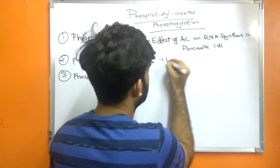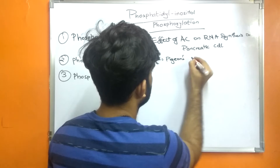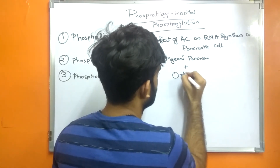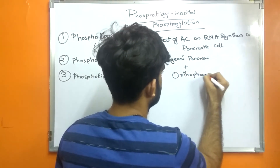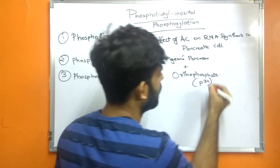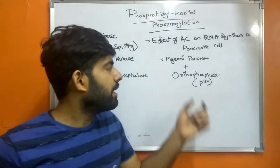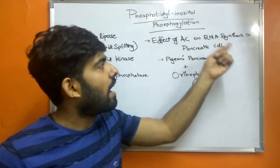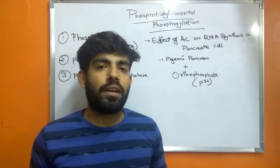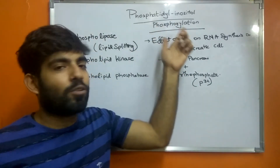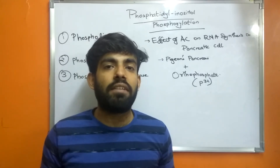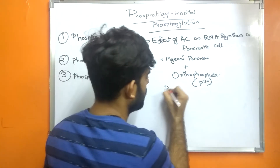What they did was incubate slices of a pigeon's pancreas with orthophosphate. This orthophosphate included the P32 radioisotope. They thought that the P32 radioisotope would be utilized in RNA synthesis, but later studies revealed that this P32 was incorporated into the plasma membrane for the formation of phosphatidyl inositol, which was further carried into its derivatives.